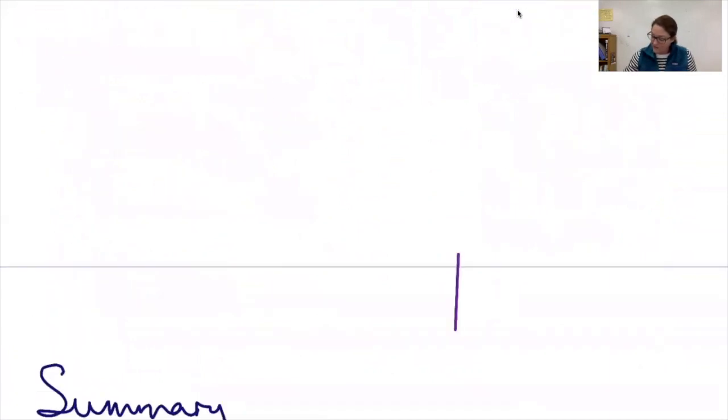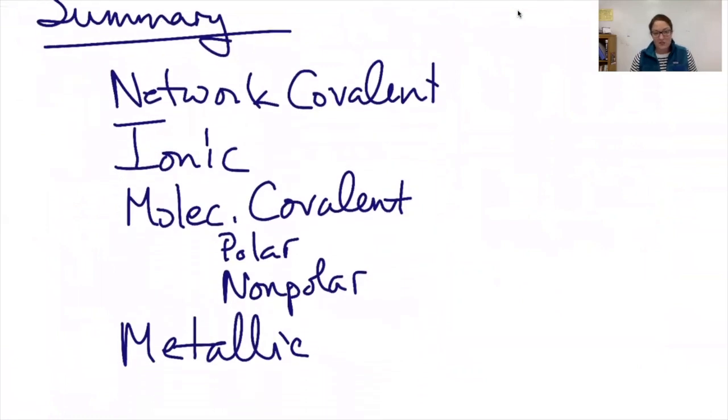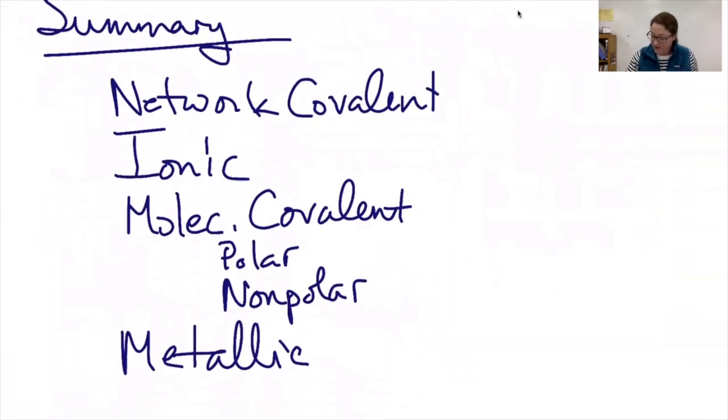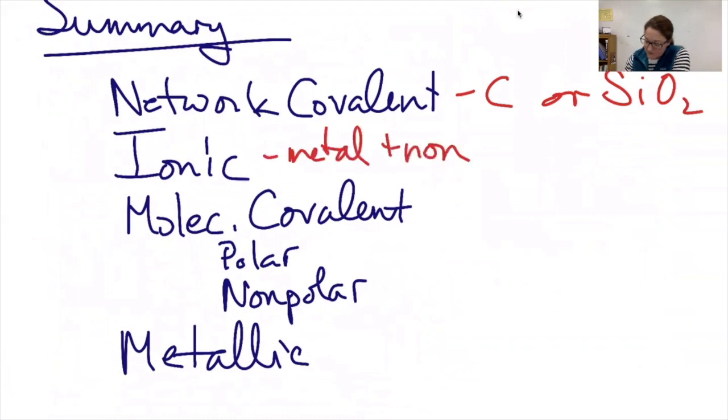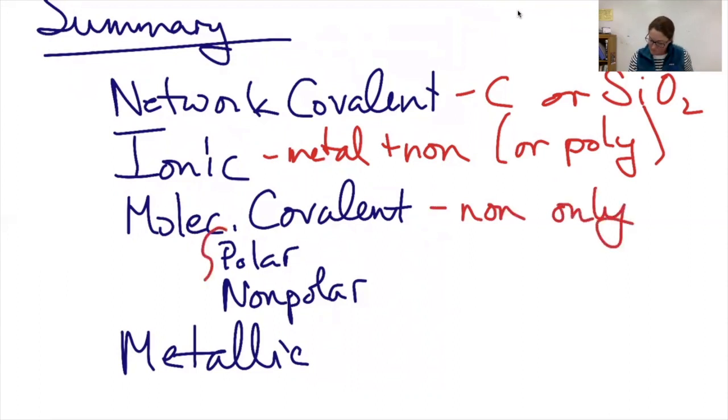So if we were going to summarize and what we need to know in order to identify, we know that network covalent is going to be these two examples. Ionic: metal plus a nonmetal, or a polyatomic ion substituted in. Molecular covalent: nonmetals only, and you're going to have to draw the Lewis structure to decide. Metallic ones are metals only.